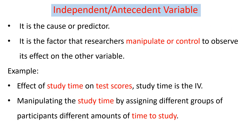The first type of research variable is the independent or antecedent variable. As the name implies, it does not depend on the other variable. Rather, it becomes a cause or a predictor for the other variable. It is a factor that the researcher manipulates or controls to observe its effect on the dependent variable.